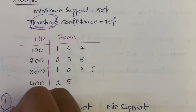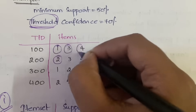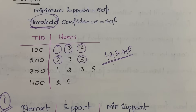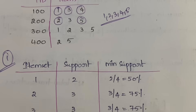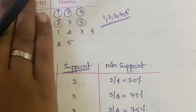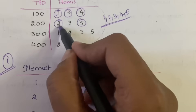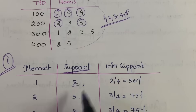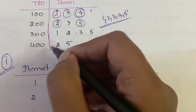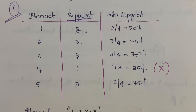In the first step, we write the frequency of each distinct item. The distinct items are 1, 2, 3, 4, and 5. The support (frequency) of item 1 is 2, item 2 is 3, item 3 is 3, item 4 is 1, and item 5 is 3. Support is calculated by counting how many times each item appears across all transactions, regardless of TID.